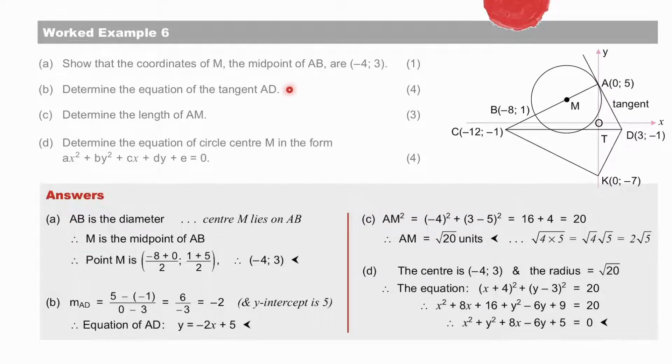To find the equation of the tangent AD, we have two points, A and D, from which to calculate the gradient. And point A is in fact the y-intercept, and therefore c is equal to 5. And the equation is easily found. To find the length of AM, we use the distance formula.